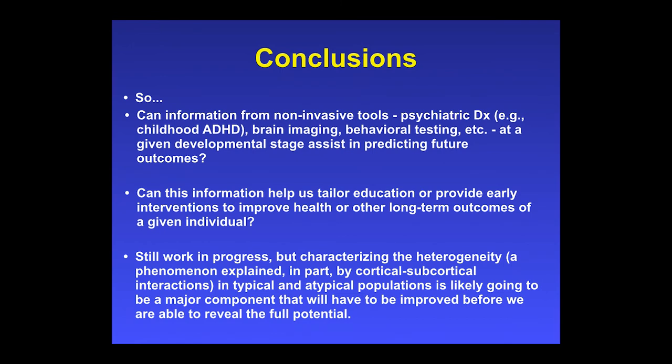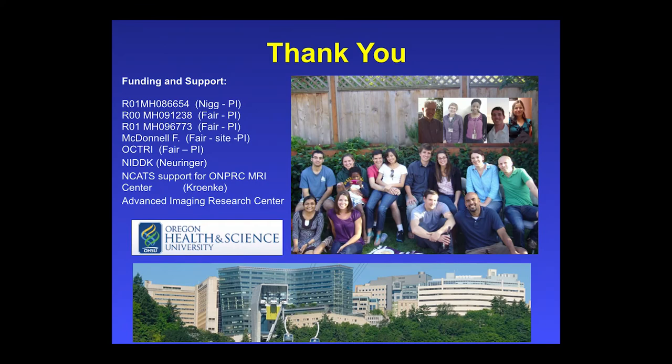The question is: can information from these non-invasive tools, these new technologies that we're using such as brain imaging, at a given developmental stage, assist in predicting future outcomes? Can this information help us tailor education or provide early interventions to improve health or other long-term outcomes? Well, all this stuff is still very much a work in progress, but it's clear that characterizing the heterogeneity—a phenomenon explained in part by these brain measurements that I talked about earlier—in typical and atypical populations is likely going to be a major component that will have to be improved if we are able to reveal our full potential in this regard.